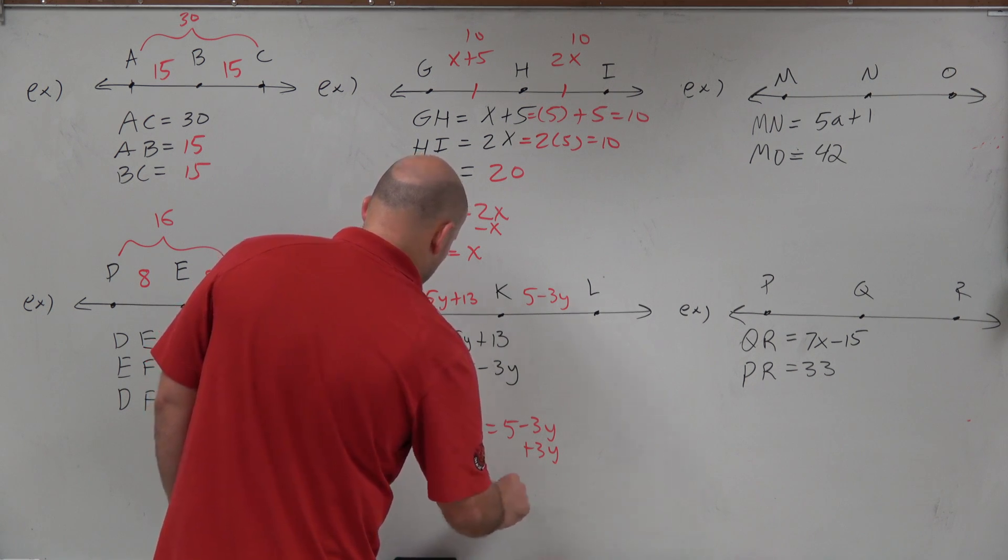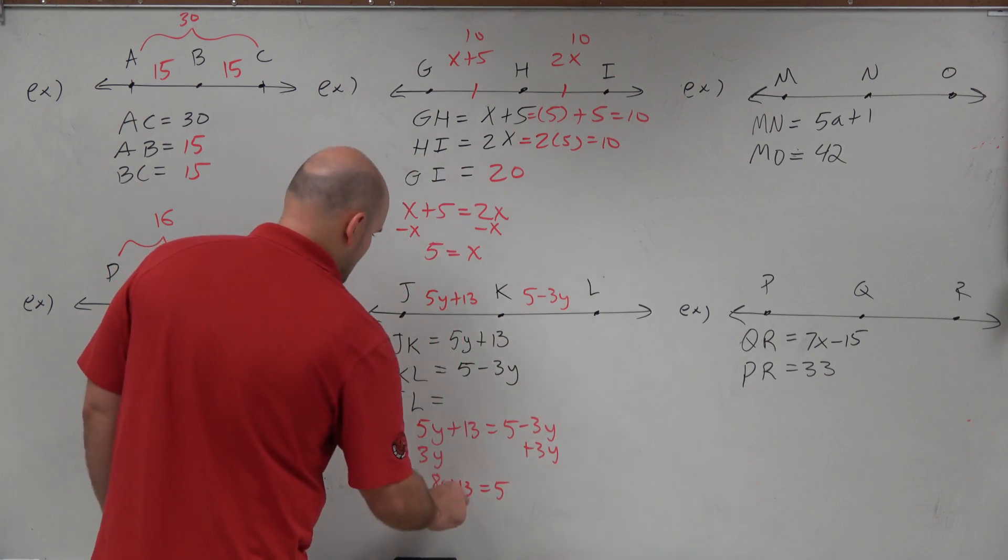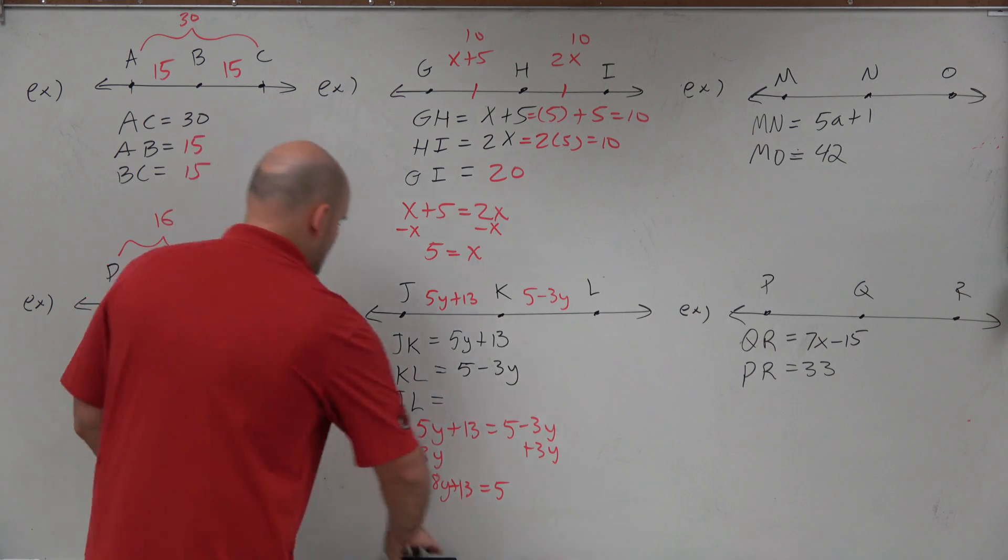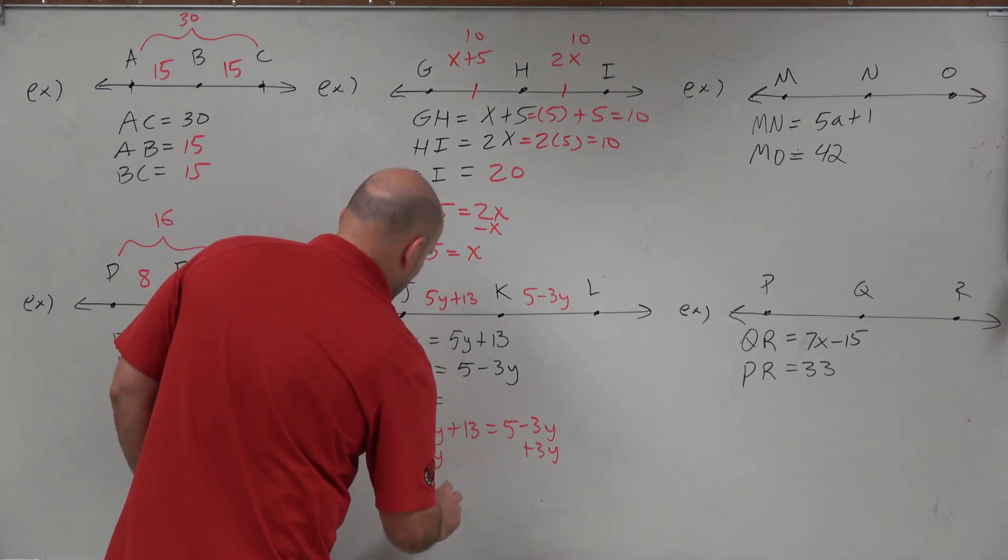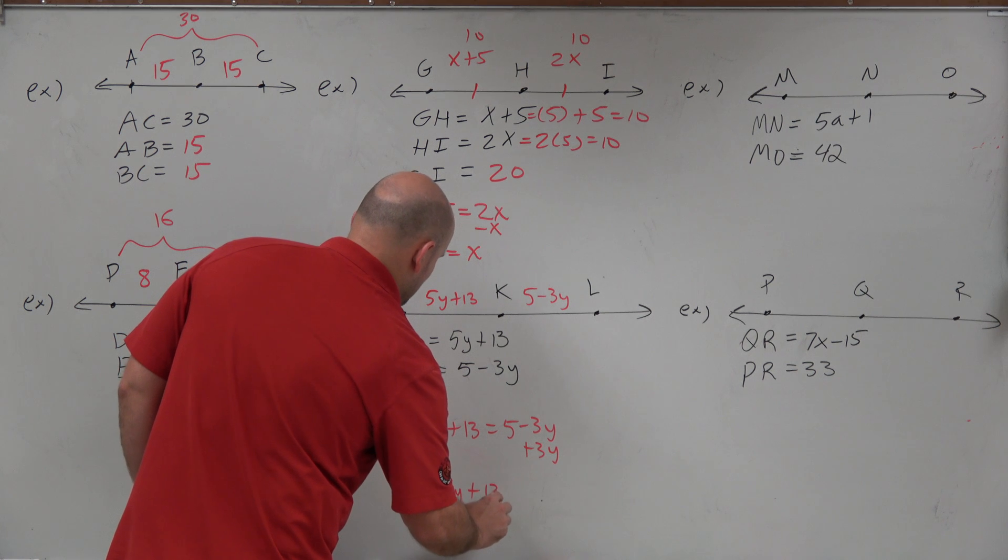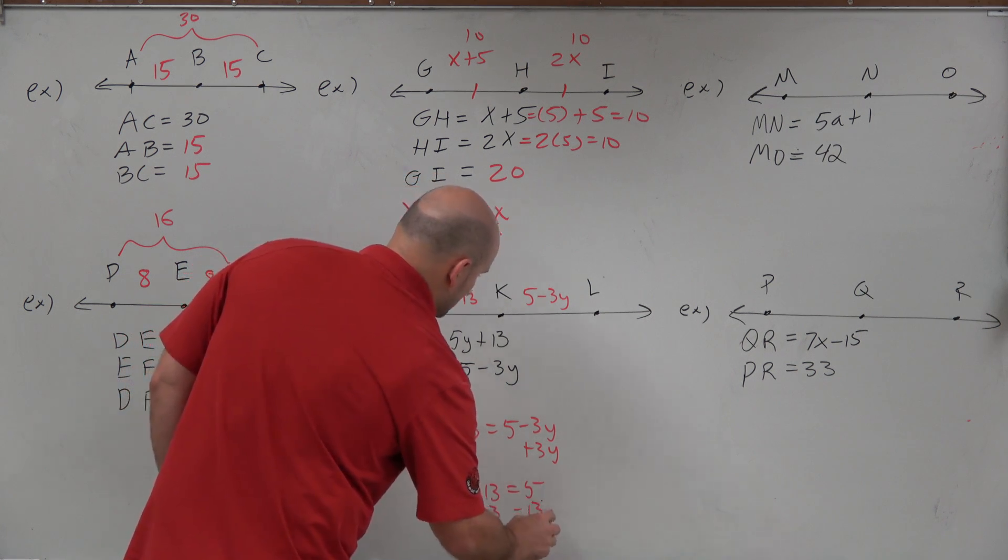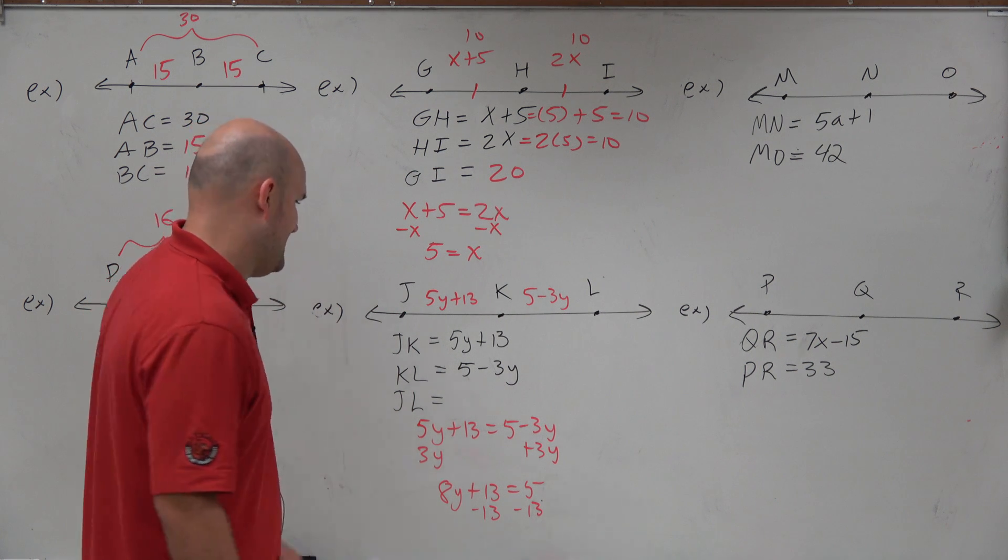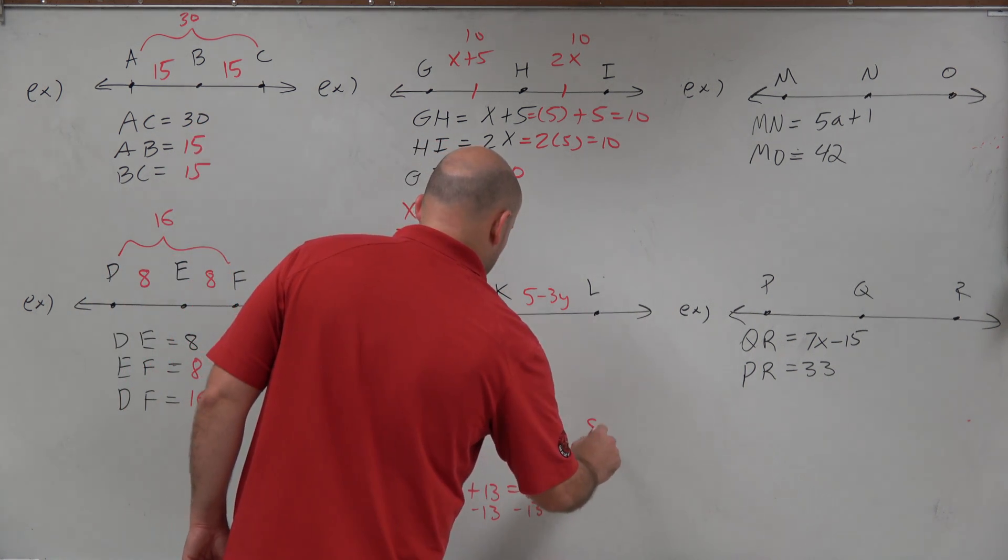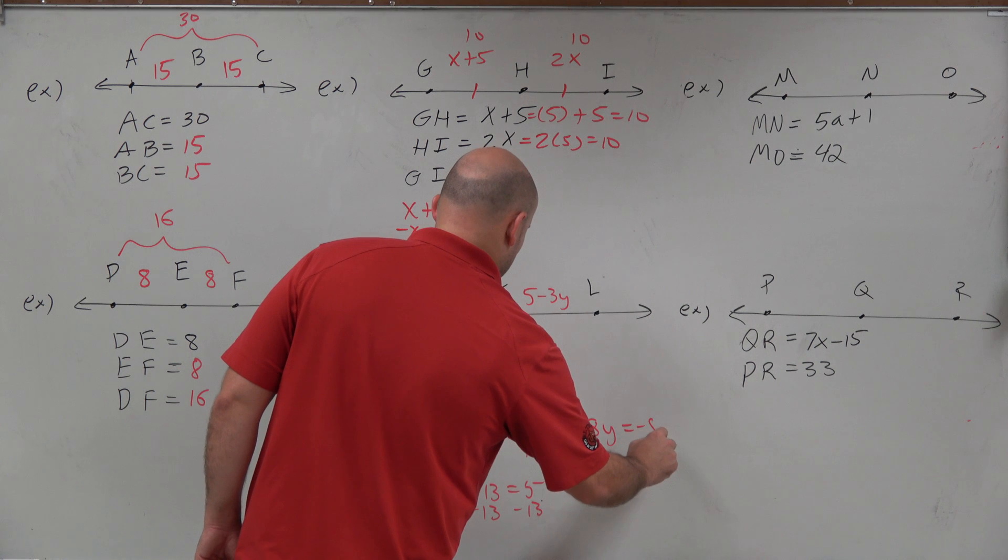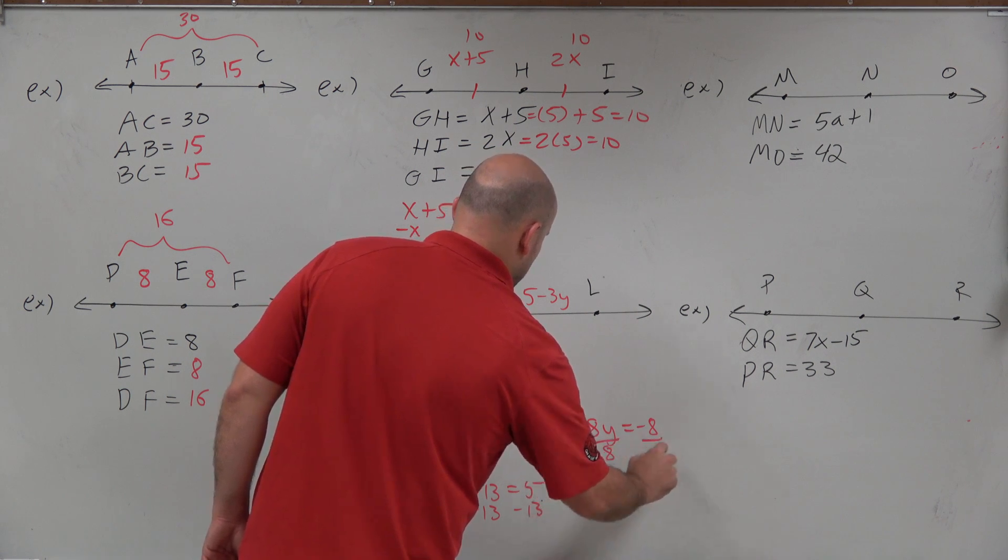Now let's just do this. 8y plus 13 equals 5. So we have 8y plus 13 is equal to 5. Then subtract 13, subtract 13. And therefore, that's going to be 8. So therefore, we'll have 8y is equal to negative 8. Divide by 8, divide by 8. Y is equal to negative 1.